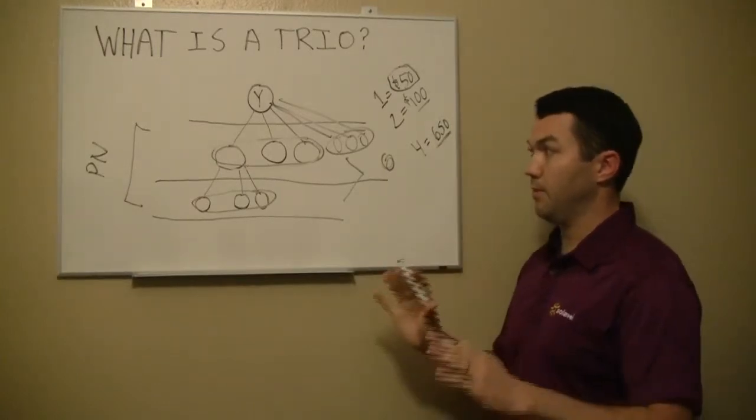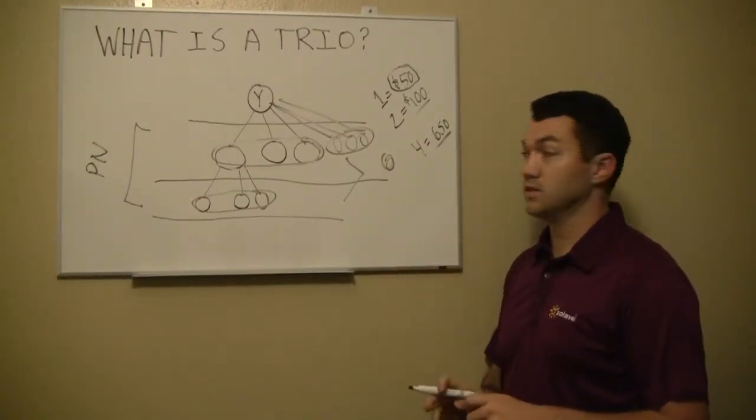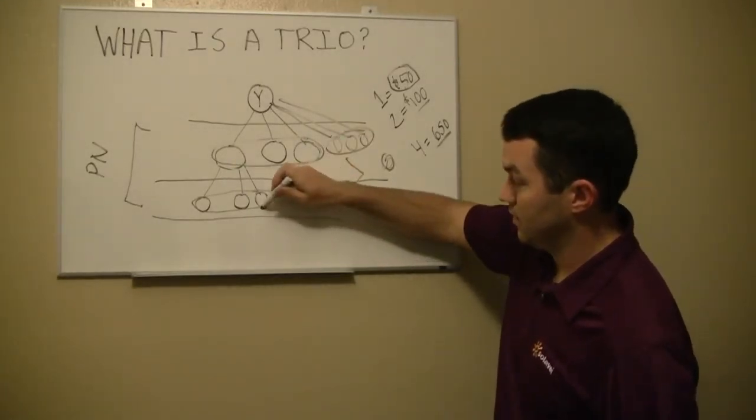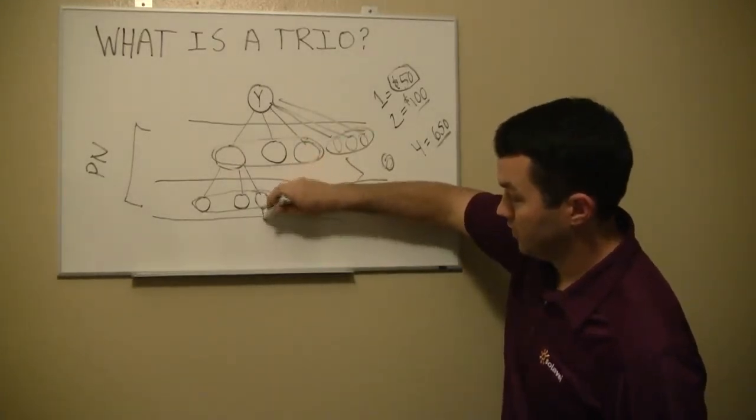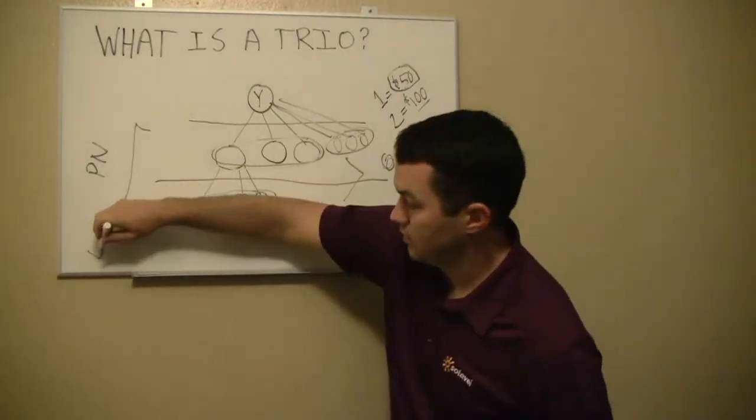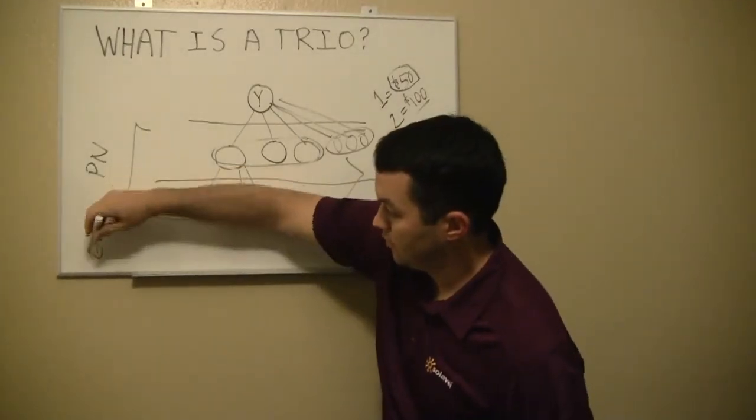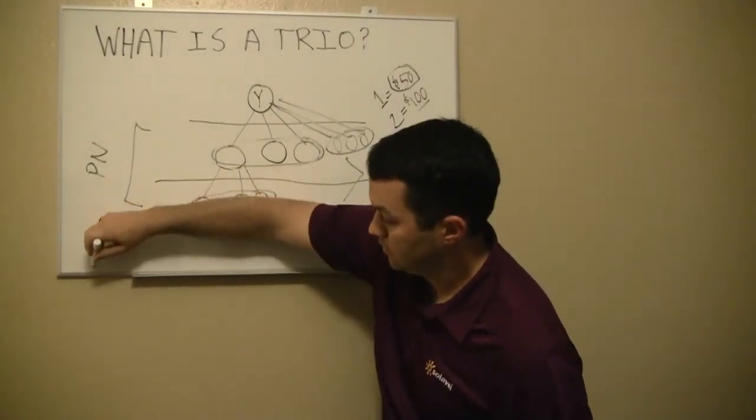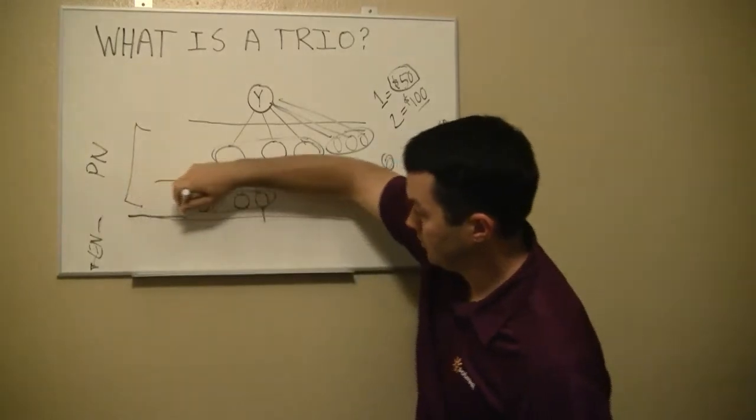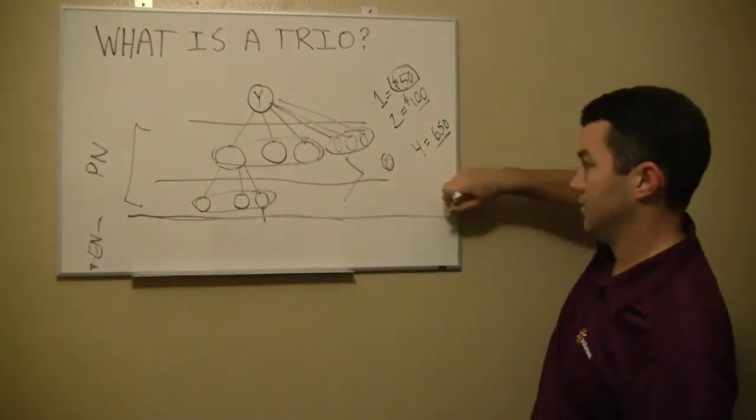So the goal is to get 12 to maximize that fast action bonus. But again, basically to answer the question, what is a trio? Let's look at it again. Let's say this person comes on here. This is your extended network. Everything that goes below here. Extended network.